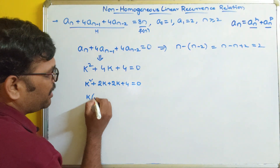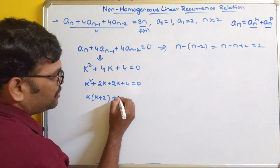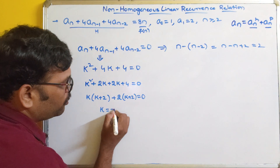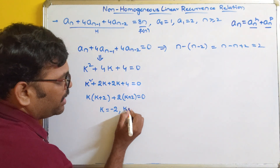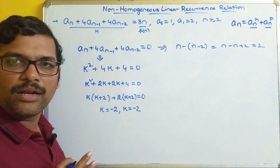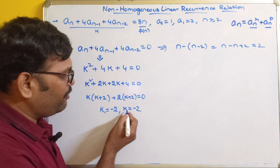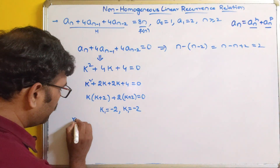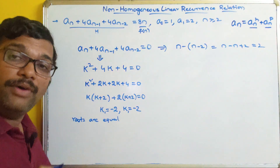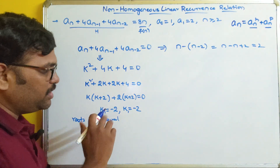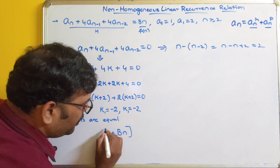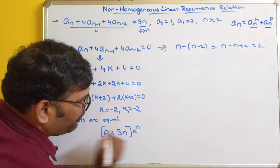Taking k as common: k(k + 2) + 2(k + 2) = 0, giving (k + 2)(k + 2) = 0. That becomes k = -2 and again k = -2. So obviously both roots are equal. The roots are k₁ = k₂ = -2. When roots are equal, we use the general solution: a_n = (a + bn) · k^n.